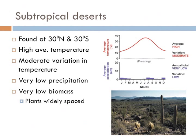At the other end of the spectrum are subtropical deserts, found throughout the world at two distinct latitudes: 30 degrees north and 30 degrees south. Most of the world's great deserts are subtropical deserts — the Sahara, the Gobi, the Sonoran, and even the Australian Outback — all characteristically formed as a consequence of the Hadley cell. Subtropical deserts are characterized by high average temperatures that vary moderately, very low precipitation, very low biomass, and plants that are widely spaced due to high competition for water.